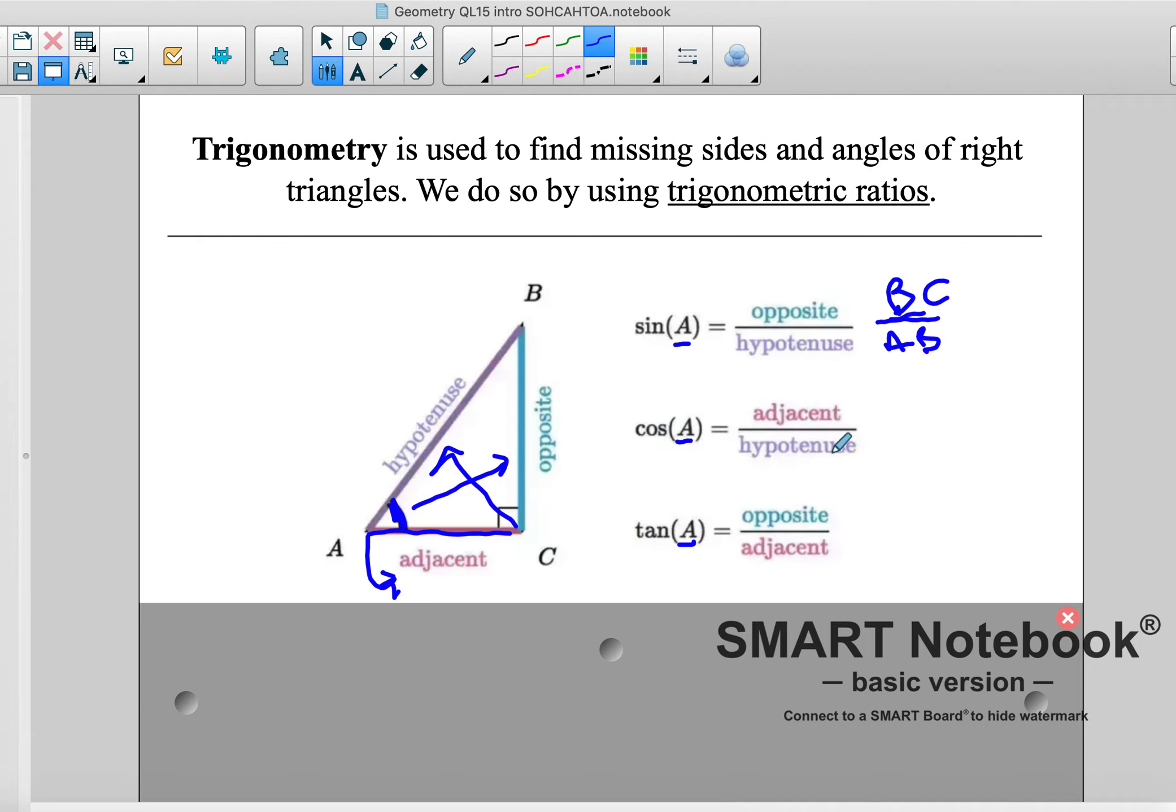And then we're looking at adjacent over hypotenuse for cosine of A. Well, the adjacent, we know with our reference angle A is AC over the hypotenuse. Again, hypotenuse is always that AB.